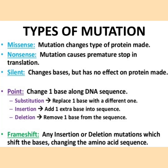What are the types of mutations that can occur? Missense mutation: mutation changes the type of protein made. Nonsense mutation: mutation causes a premature stop in translation. Silent mutation: changes a base but has no effect on the protein made. Point mutation: changes one base along the DNA sequence. The point mutation can be substitution, insertion, or deletion. In substitution, one base is replaced with a different one; in insertion, one extra base is added; in deletion, one base is removed from the sequence.